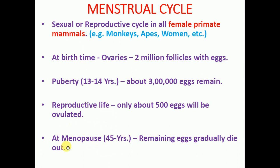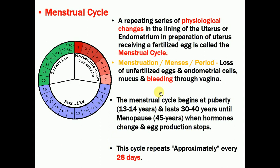At menopause, around 45 years of age, women do not have the menstrual cycle, production of eggs stops, and all remaining eggs totally die out. That stage is called menopause, and the menstrual cycle also stops during menopause. The menstrual cycle is defined as the physiological changes that occur repeatedly in the uterus — especially in the endometrium — in preparation to receive a fertilized egg. Those changes in the uterus are called the menstrual cycle.